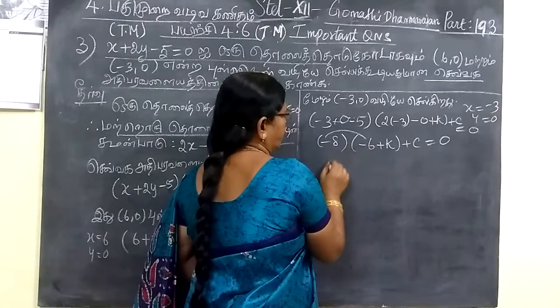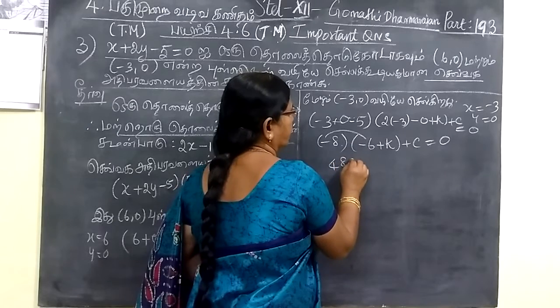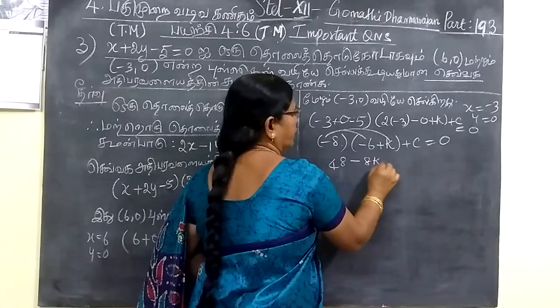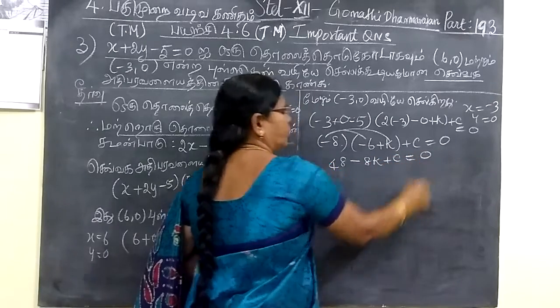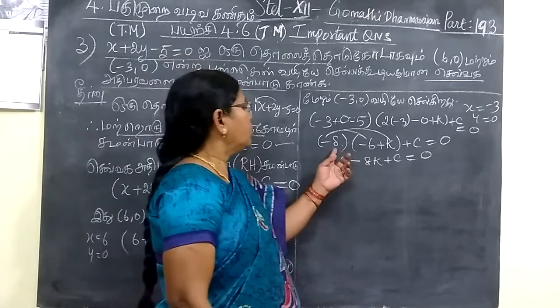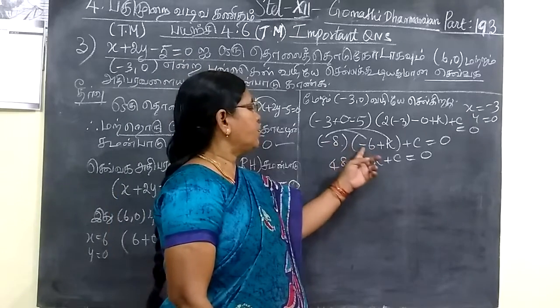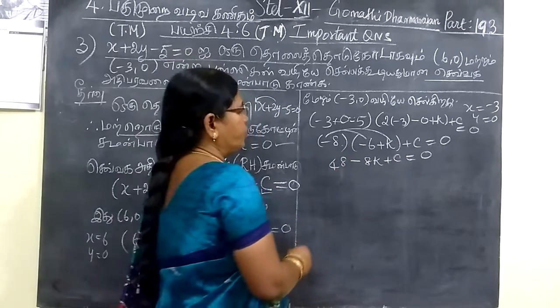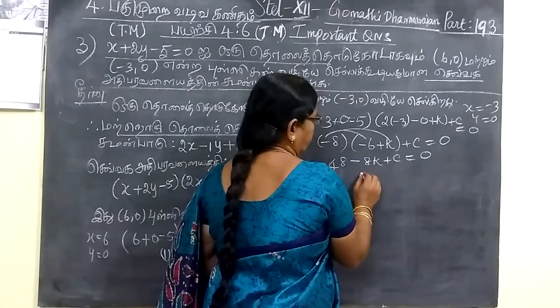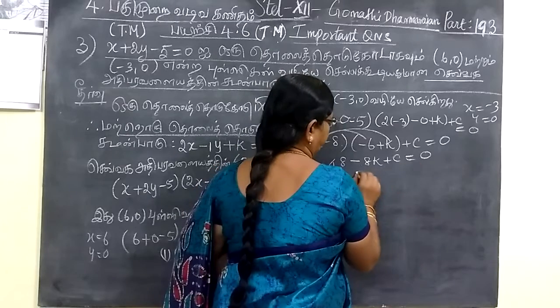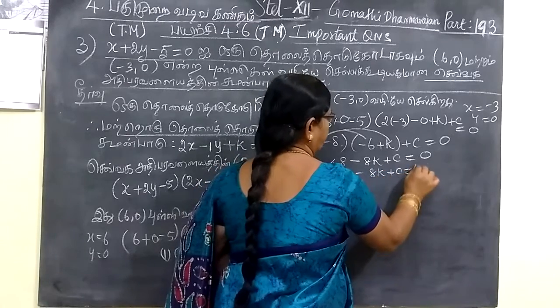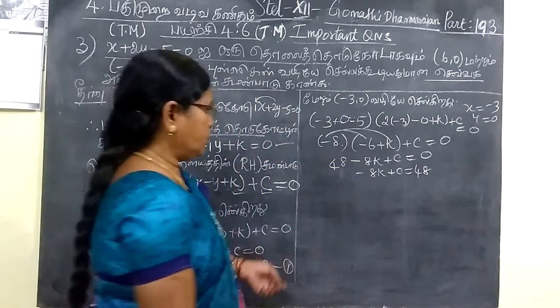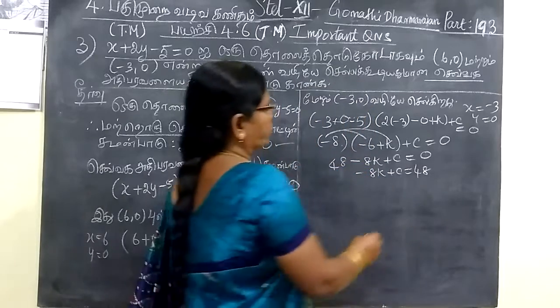Students may commit mistake in the minus. We will be careful with this. Now in general, minus 8k plus c equal to 48k. So this is equation 2 of this group.